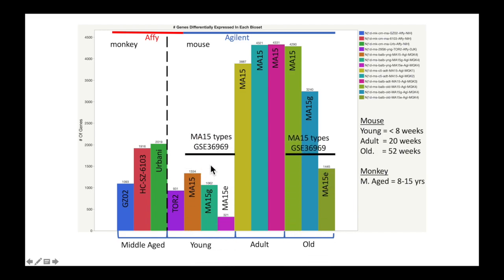The same group tested both young and old animals with three different strains of virus. Our hypothesis would be that the MA15 is most severe, this mutation made it less severe, and the MA15 epsilon is the least severe. We can see the same pattern in both young and old — more severe, less severe, the least severe. What's nice is they're all from the same dataset, so it's almost a direct comparison. We're seeing both an age effect — with age you get more genes responding to infection — and the fewer genes the less severe the virus form.